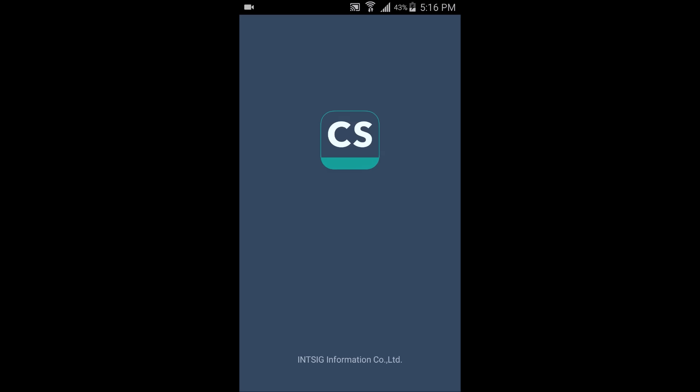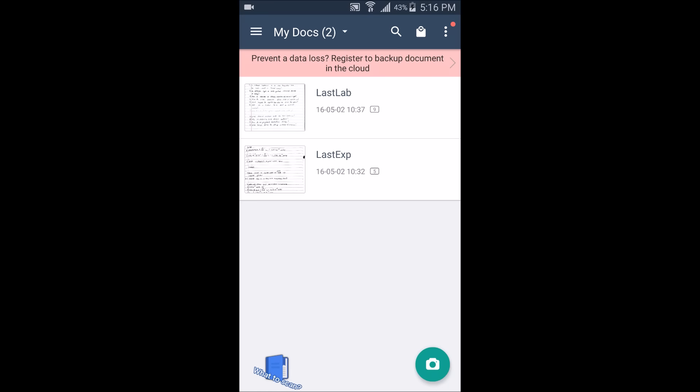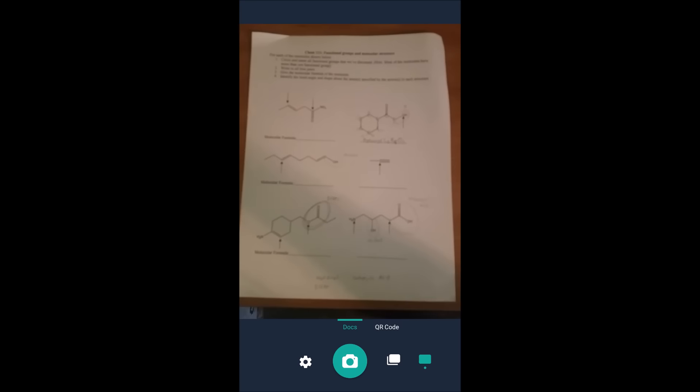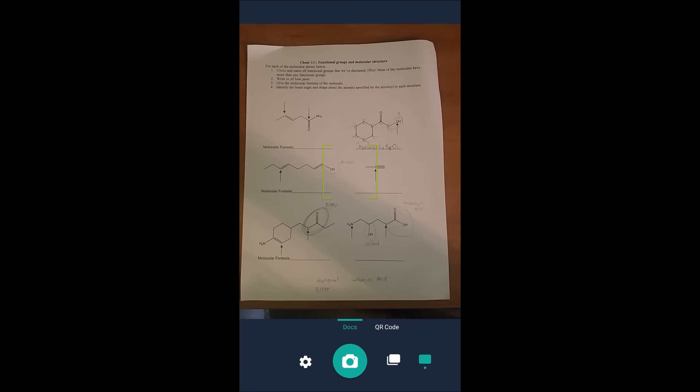So you open the app and it's a quick load up. You hit the camera button on the bottom right and you go straight away to scanning. So line up a scan, I have here a chemistry document, and then just take the picture.